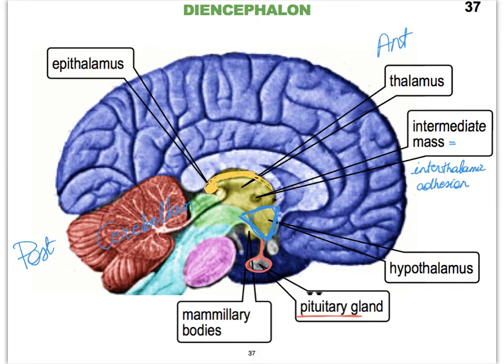Protruding from the hypothalamus, we have this little bulge — there would be one in each hemisphere — and that is a protruding pair of nuclei. Remember, a nucleus is a collection of cell bodies. The whole diencephalon is full of nuclei appearing as grey matter. We refer to these nuclei that are bulging out as mammillary bodies, because when we see them as a pair, they look like two little nipples, which is what mammilla refers to.